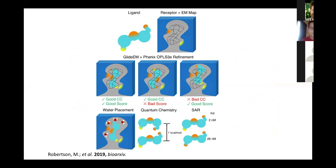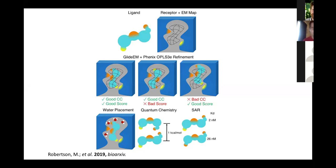We worked together with Schrödinger to develop a pipeline called GEMspot, which we put on bioRxiv in 2019 and is now available in Maestro. It starts by performing computational docking with the EM map as an additional restraint. You have your ligand of interest and your receptor with the map, then perform docking to identify poses that have both a good cross-correlation with the map and a good docking score — making favorable interactions while fitting well into the density.